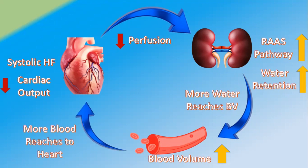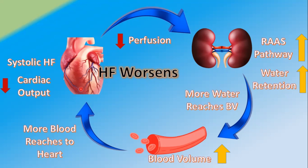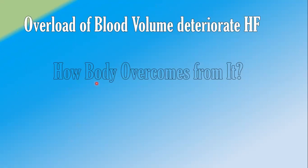More blood reaches to the heart, which is already suffering with heart failure and is already weak. It cannot take an excess amount of blood, resulting in worsening of heart failure. The heart becomes weaker and weaker, causing more activation of the RAS pathway, more blood volume overload in the vessels, and more and more worsening of heart failure. This is how overload of blood volume is responsible for deteriorating the heart condition in heart failure.